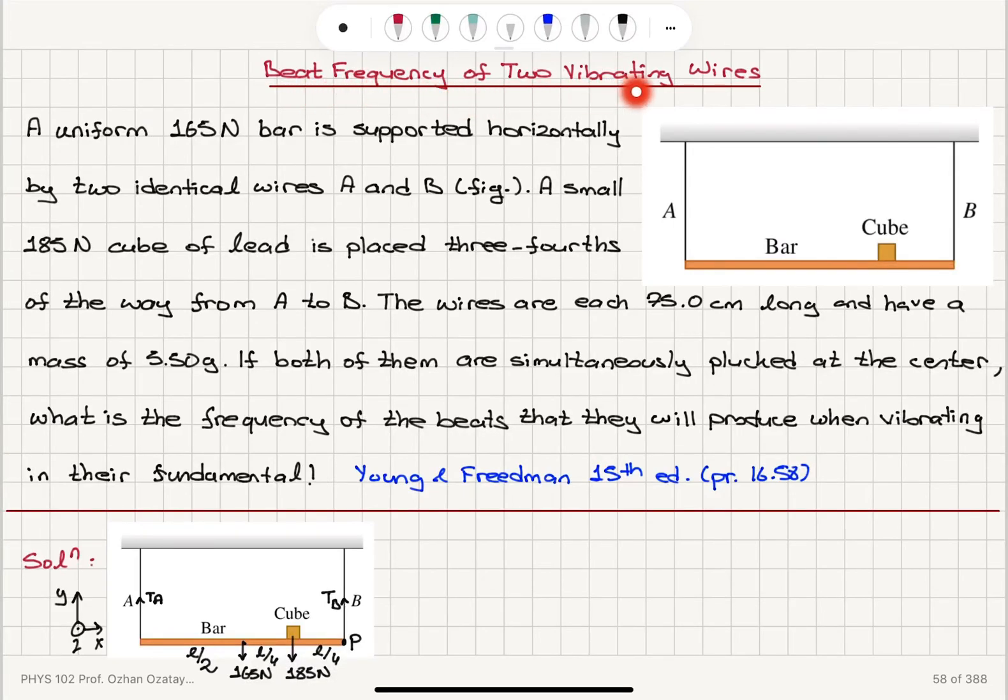Beat frequency of two vibrating wires. A uniform 165 Newton bar is supported horizontally by two identical wires A and B as seen in the figure. A small 185 Newton cube of lead is placed three-fourths of the way from A to B.